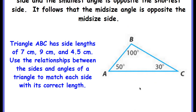We have a triangle here and we're given three of its angles. Triangle ABC has side lengths of seven centimeters, nine centimeters, and four and five tenths centimeters. We're going to use the relationship of small side opposite small angle to match each side with its correct length. I always like to start with the largest — you don't have to, but I'm going to start with the large.